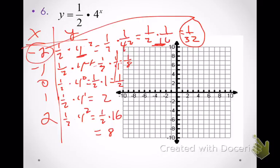Let's plot those points. (−2, 1/32) is right here, very close to the x-axis. (−1, 1/8) is right here. Then (0, 1/2), then 1 goes to 2, and 2 goes to 8. We have an idea of the shape of our graph, and we graph it — there it is. Just plug in negative 2, negative 1, 0, 1, and 2, see what you get out, match inputs to outputs, plot your points, and draw your graph.